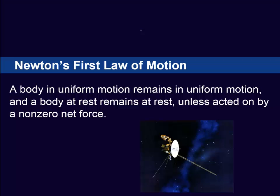Newton's first law is that a body in uniform motion remains in uniform motion and a body at rest remains at rest unless acted on by a non-zero net force. So if that net force is zero, then the object will either stay at rest or it will continue to move at a constant velocity. There's a little picture there of the Voyager spacecraft which has now left the solar system and is just moving through interstellar space at a constant velocity. There's no net force on the Voyager and that's why it just continues to clock along.